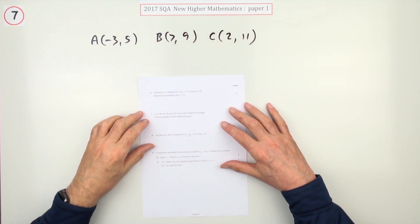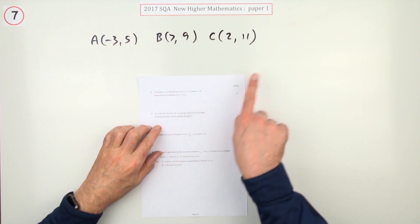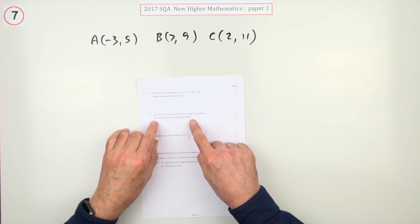Number 7 from paper 1 of the 2017 Higher Maths. Three marks for finding a line in a triangle. No diagram this time, but you can put a little sketch down just to help. Find the equation of the median through C.